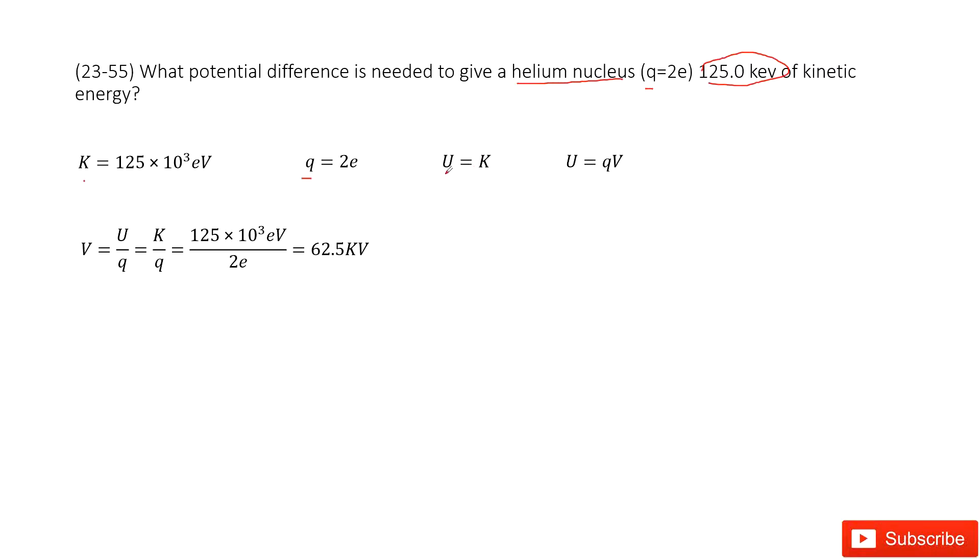The electric potential energy can be written as the charge times the potential difference. Now if we want to find the potential difference V, we can use the electric potential energy divided by charge and this potential energy equals kinetic energy.